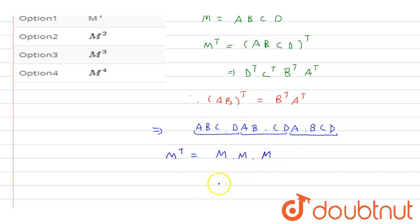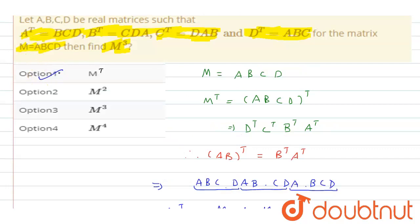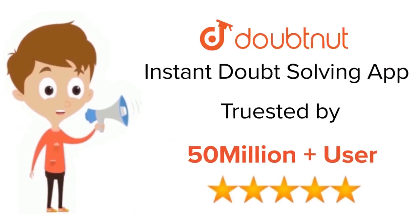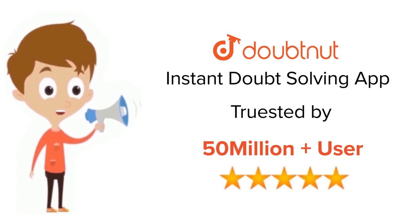From here we get M cube equals M transpose, so option one is the right answer. For class 6 to 12, IIT JEE and NEET level, trusted by more than 5 crore students.